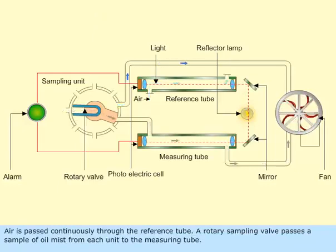Air is passed continuously through the reference tube. A rotary sampling valve passes a sample of oil mist from each unit to the measuring tube.